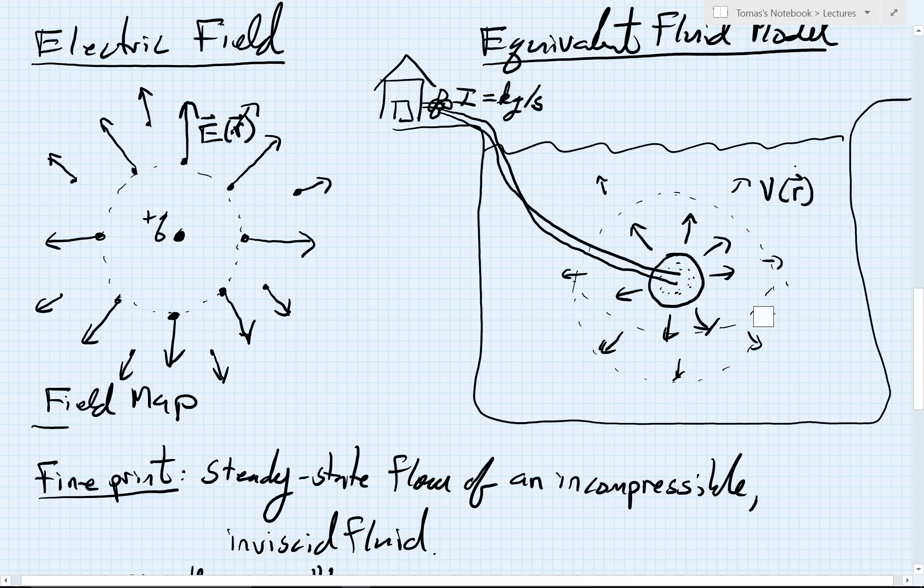When I make that relationship, I'll be able to solve for the velocity at any distance r away from the point source and then see whether it lines up with the electric field.